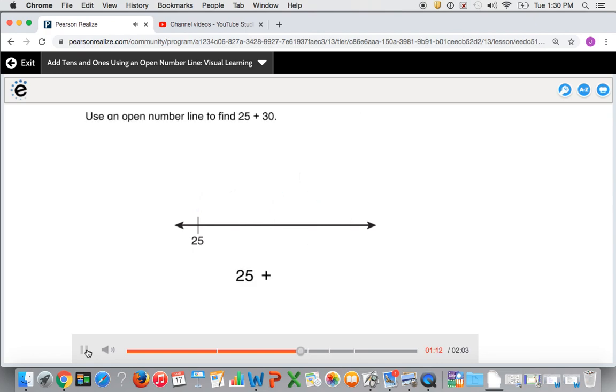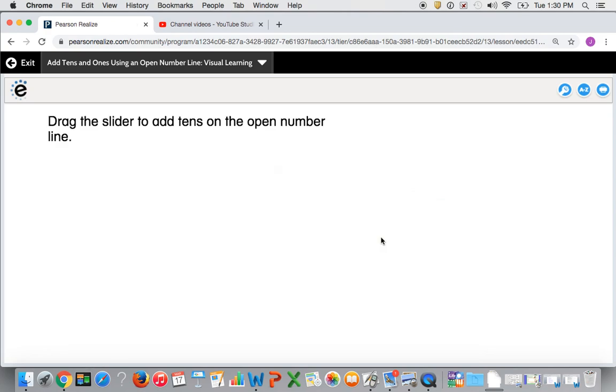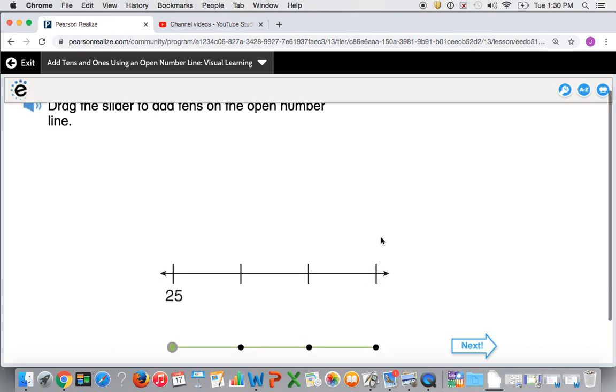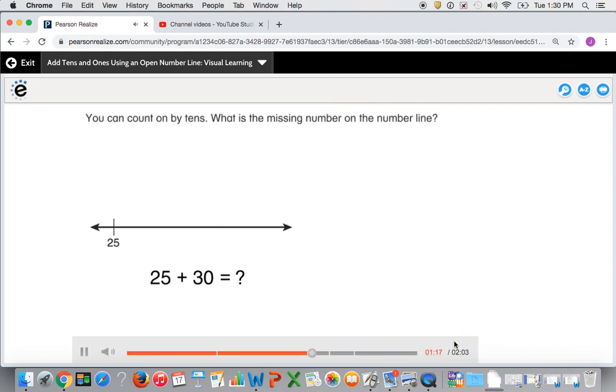Use an open number line to find 25 plus 30. You can count on by tens.